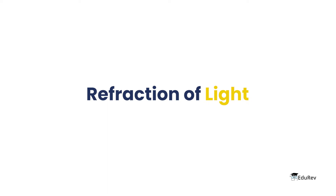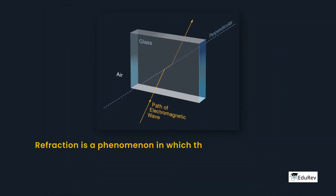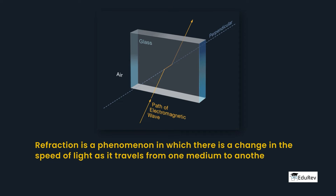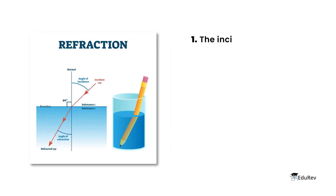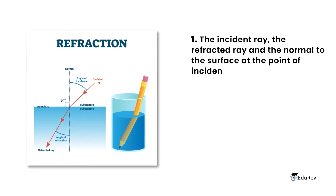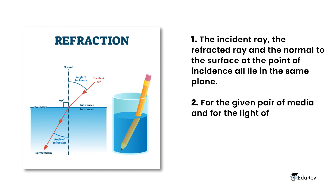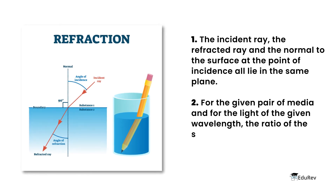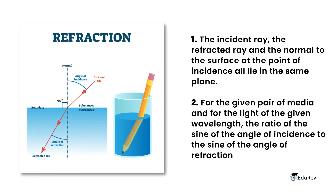Let's move on to the topic of refraction of light. Refraction is a phenomenon in which there is a change in speed of light as it travels from one medium to another, because of which bending of the ray takes place. The refracted ray obeys some laws: the incident ray, the refracted ray, and the normal to the surface at the point of incidence all lie in the same plane. For the given pair of media and for light of the given wavelength, the ratio of the sine of the angle of incidence to the sine of the angle of refraction is always a constant.